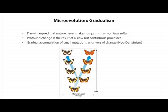We call this microevolution — poaching Darwin's terms. Darwin argued that nature never makes major leaps: profound change at a population level is the result of a very slow but continuous process. In the case of genomic evolution in a cancer, we can think about this at the single gene level, where single point mutations accumulate with many other genes to lead to profound change in clinical behavior. These gradual accumulations of small mutations are the major driver of change, elaborated in neo-Darwinist theory over the last 40 or 50 years.